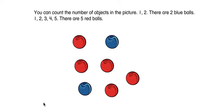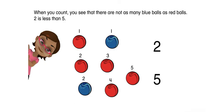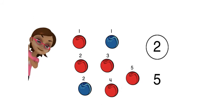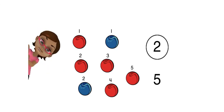You can count the number of objects in the picture. 1, 2. There are 2 blue balls. 1, 2, 3, 4, 5. There are 5 red balls. When you count, you see that there are not as many blue balls as red balls. 2 is less than 5. Now you know how to show that a number is less than another number.